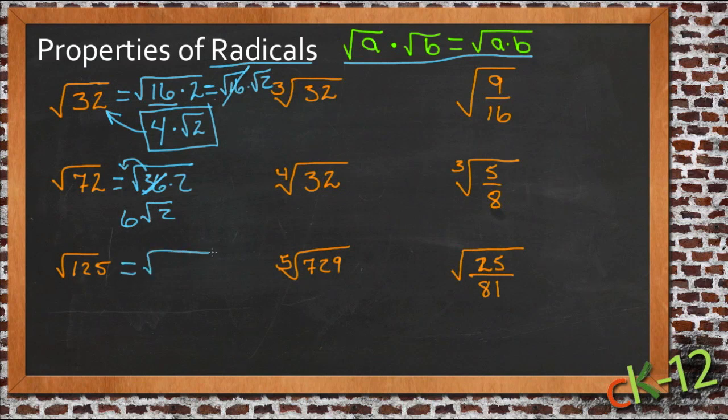125, well that would be 5 times 25, and 25 we know, so it becomes 5, so we have 5 square roots of 5.